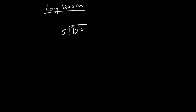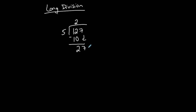You start with 5 into 1 — 5 doesn't go into 1 — so I go 5 into 12. 5 goes into 12 two times, so I put the 2 on top of the 12, and whatever goes on top gets multiplied by this. 2 times 5 is 10, and I always subtract: 12 minus 10 is 2. I bring down the next number and go 5 into 27. 5 times 5 is 25, goes on top of the 7, multiply: 5 times 5 is 25, subtract. There's no number to bring down; 5 does not go into 2, so this is my remainder.